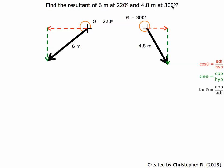The other vector is 300 degrees, 4.8 meters. We're going to go all the way around until we get to 300 degrees and then draw our arrow.